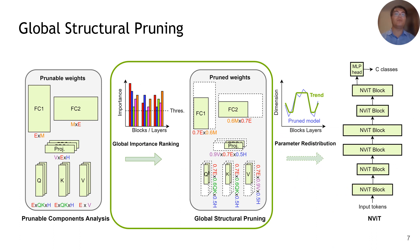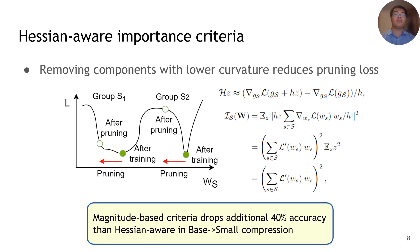Next, I would like to highlight our global importance ranking criteria and global structural pruning process. To enable global pruning, we propose a Hessian-aware importance criteria. The criteria comes from the intuition that pruning structural components with lower loss curvature reduces the loss of the pruned model. We theoretically formulate the curvature and simplify it into an efficiently computed criteria, defined as the square of the sum of all elements w times gradient g within the structural component s. This criteria reflects pruning-induced loss directly and is comparable across different components. Compared to our criteria, the traditionally used magnitude-based criteria drops an additional 40% accuracy in the base-to-small comparison setting.